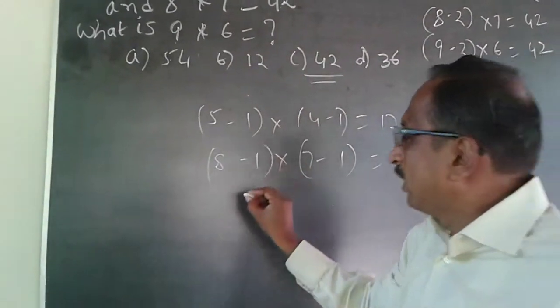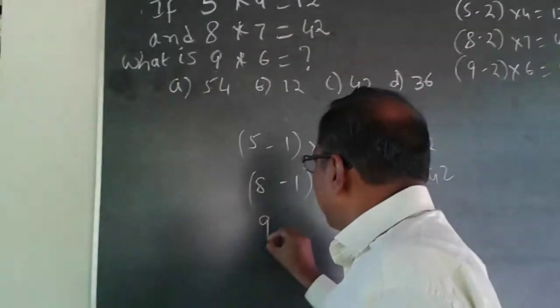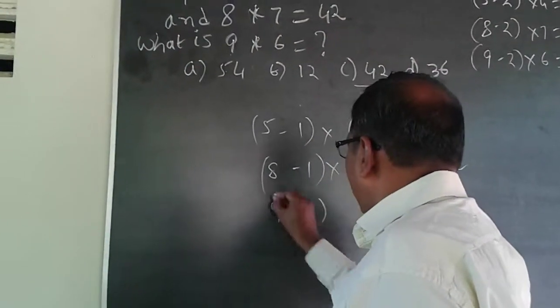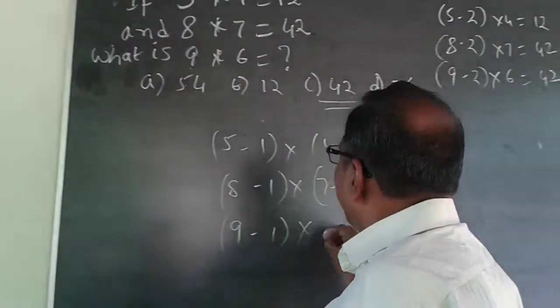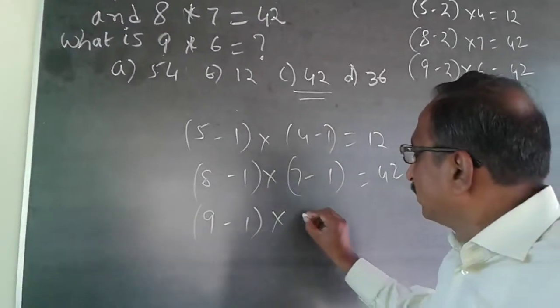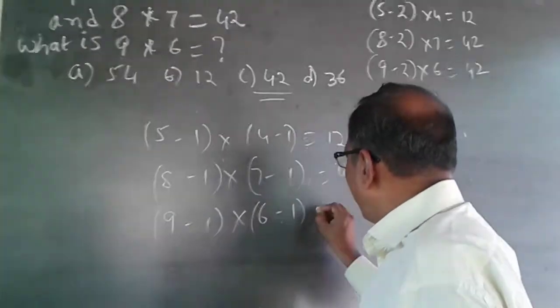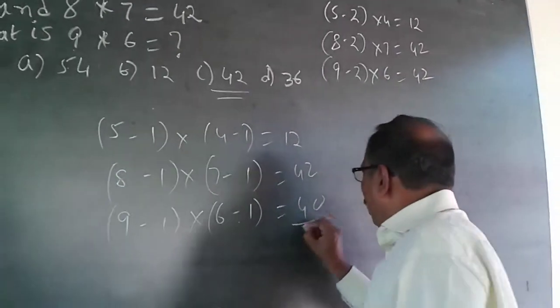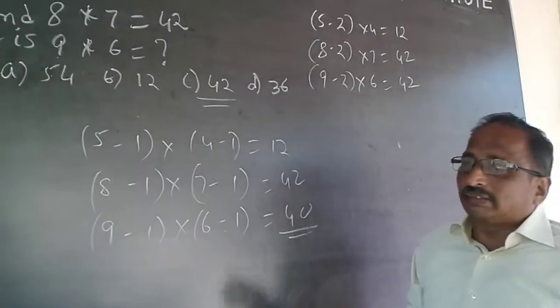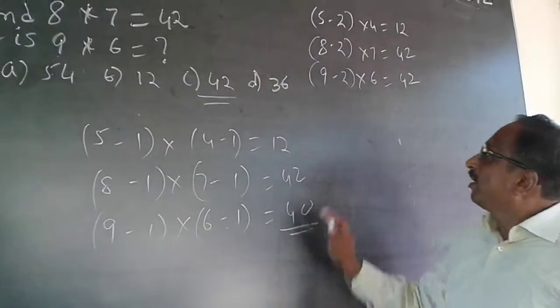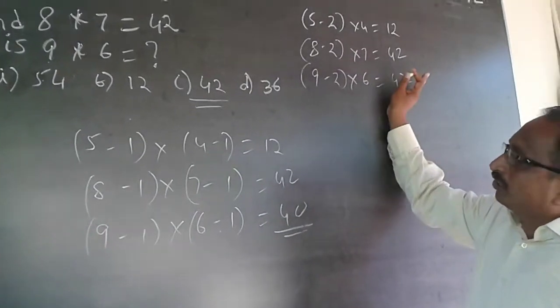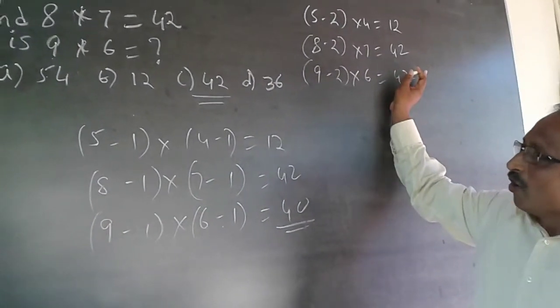Applying that second pattern: 9 minus 1 is 8, into 6 minus 1 is 5, gives 8 into 5 equal to 40. So you are also getting 40 as a possible answer, and 42 as well.